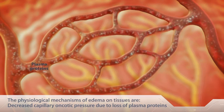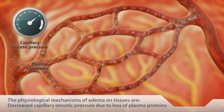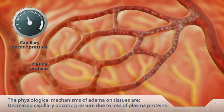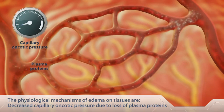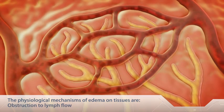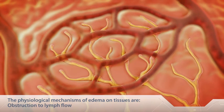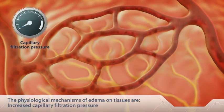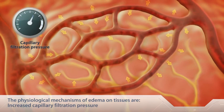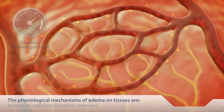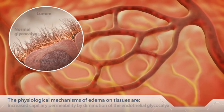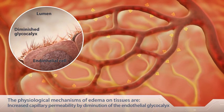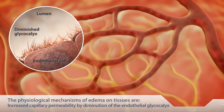The physiological mechanisms of edema on tissues include decreased capillary oncotic pressure due to loss of plasma proteins, obstruction to lymph flow, increased capillary filtration pressure, and increased capillary permeability due to diminution of the endothelial glycocalyx.